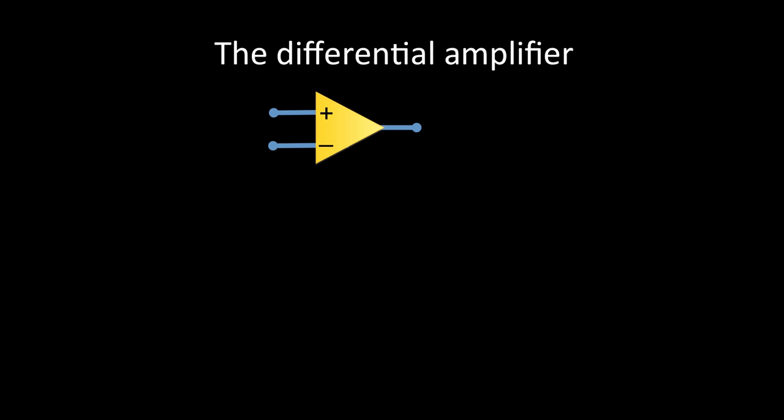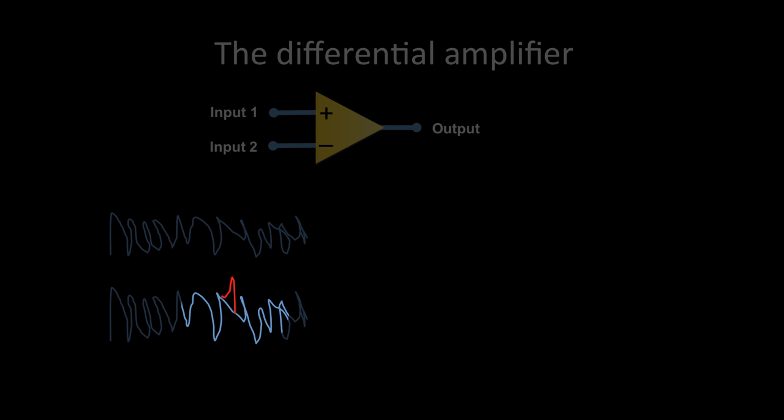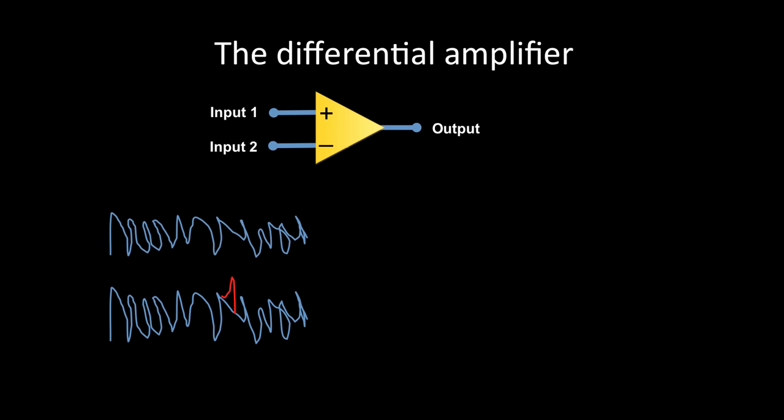EEG is recorded using the technology of the differential amplifier. The differential amplifier takes two electrical inputs and displays the output as the difference between the two inputs. This is particularly useful at recording and displaying very small electrical signals, such as those in EEG. For example, you can see these two waveforms, which are very similar except for one small difference demonstrated here in red. When these two signals are placed through a differential amplifier, you can see that the output is simply the difference between them and all of the other commonalities are cancelled out.